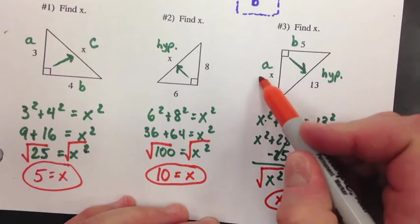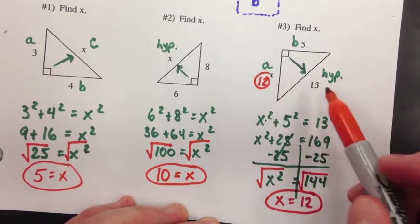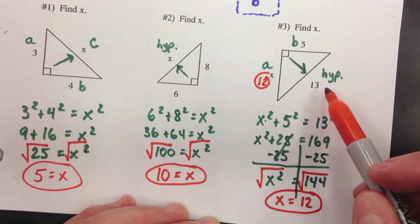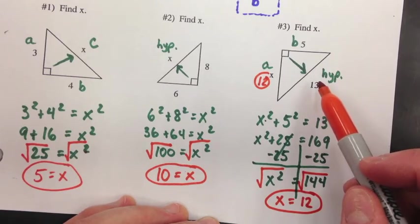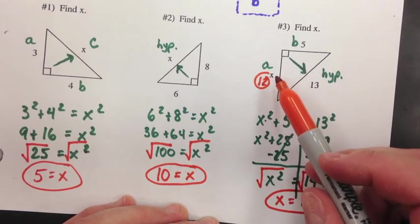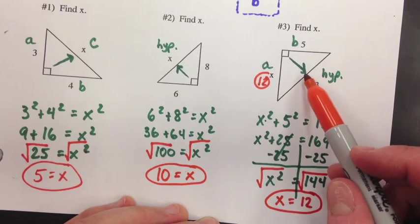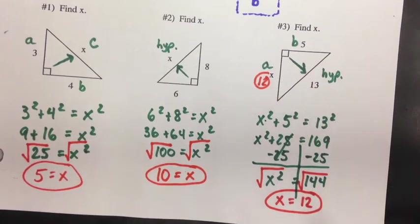Now, one thing about this. So, here's 12. 13 should be the longest side. So, if I got something bigger than 13 for X, I would know I'm wrong because the longest side is always the hypotenuse. So, the 12 makes sense. 12 makes sense as an answer. All right, go ahead and flip the page. And, we'll look at some more examples.